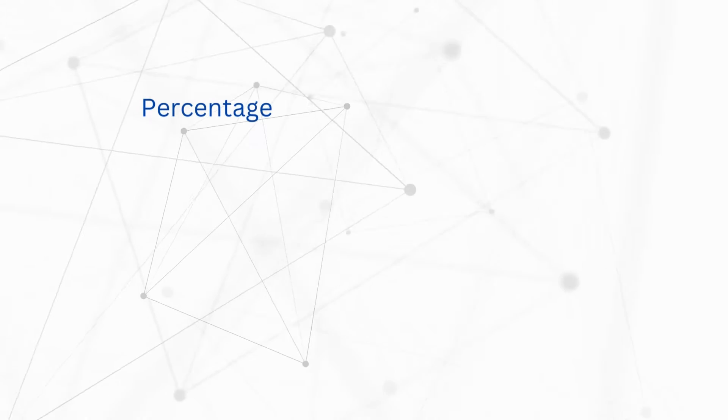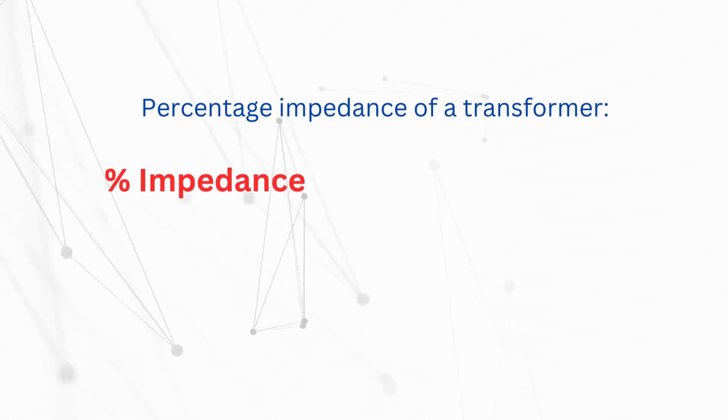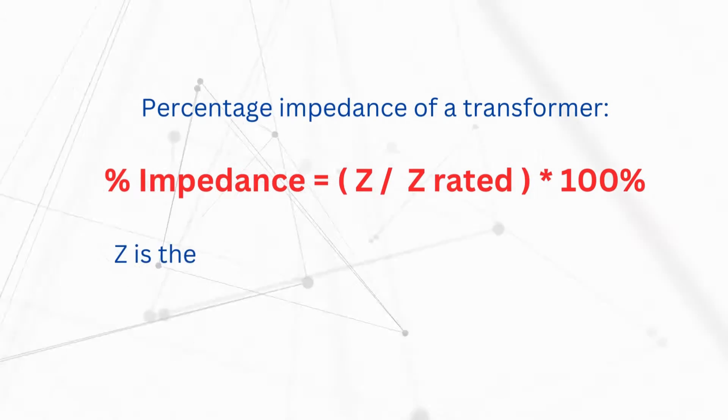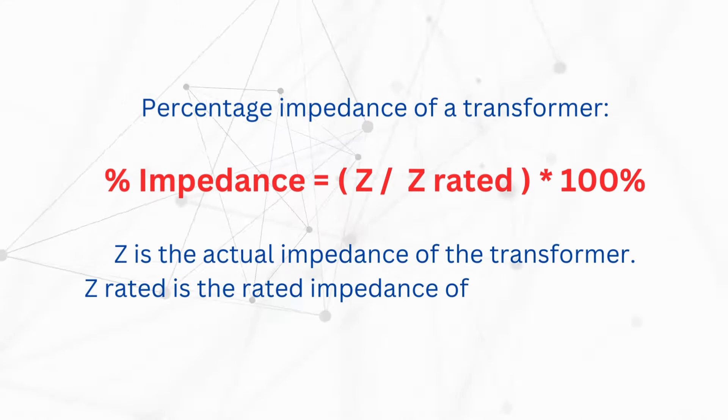Now, let's delve into the formula for calculating the percentage impedance of a transformer. Percentage impedance equals Z divided by Z rated multiplied by 100, where Z is the actual impedance of the transformer and Z rated is the rated impedance of the transformer.